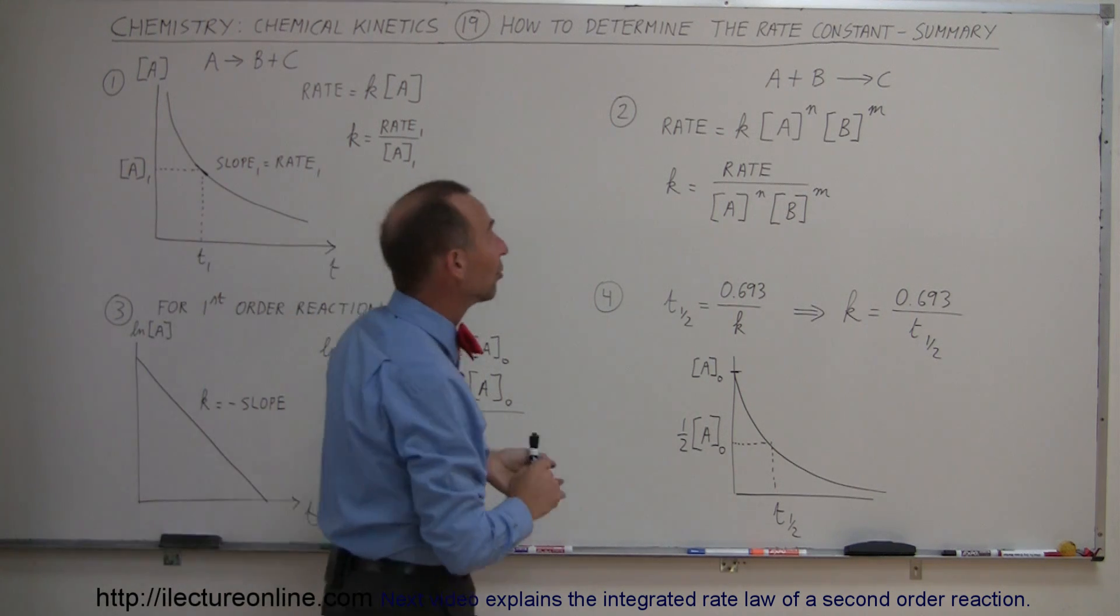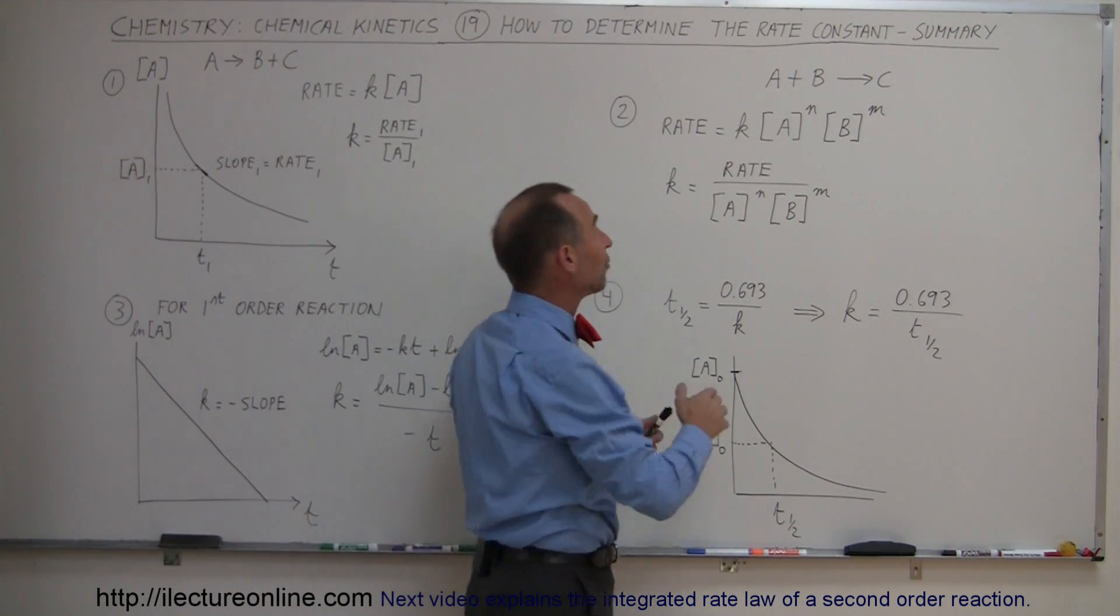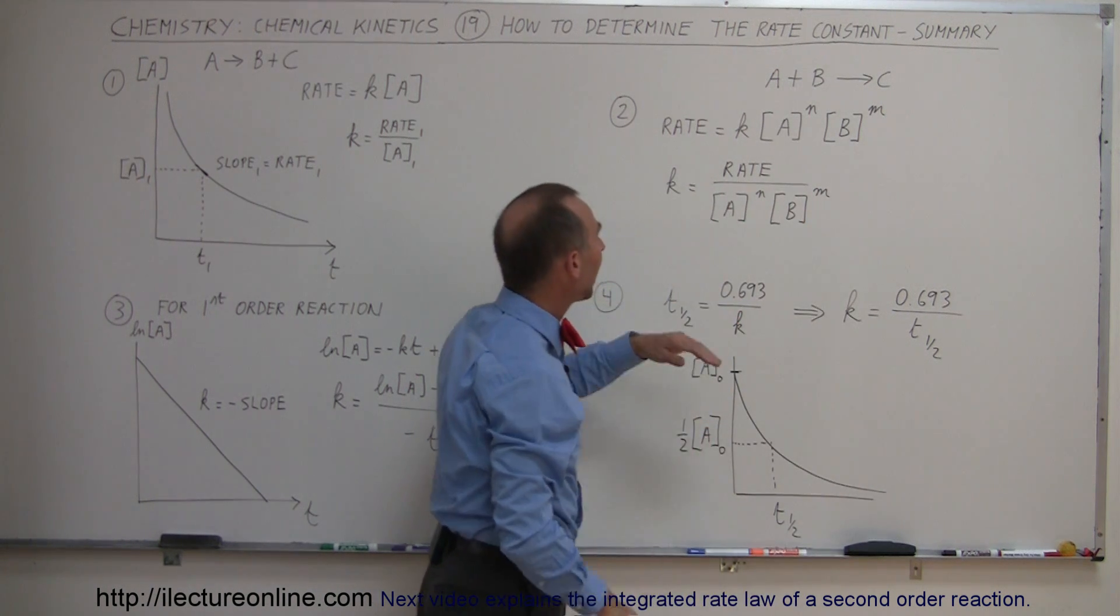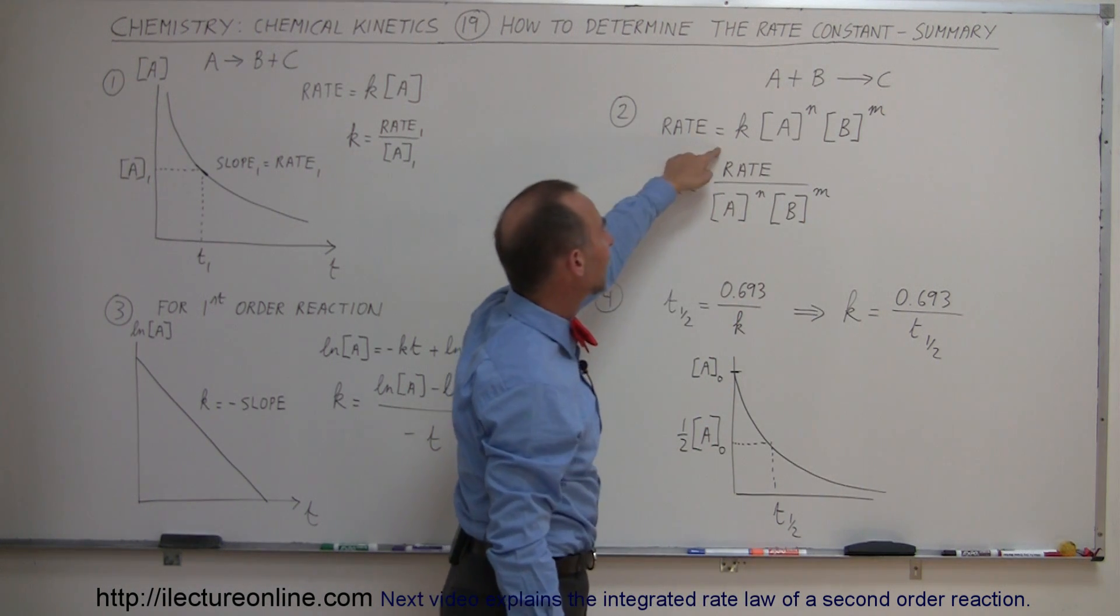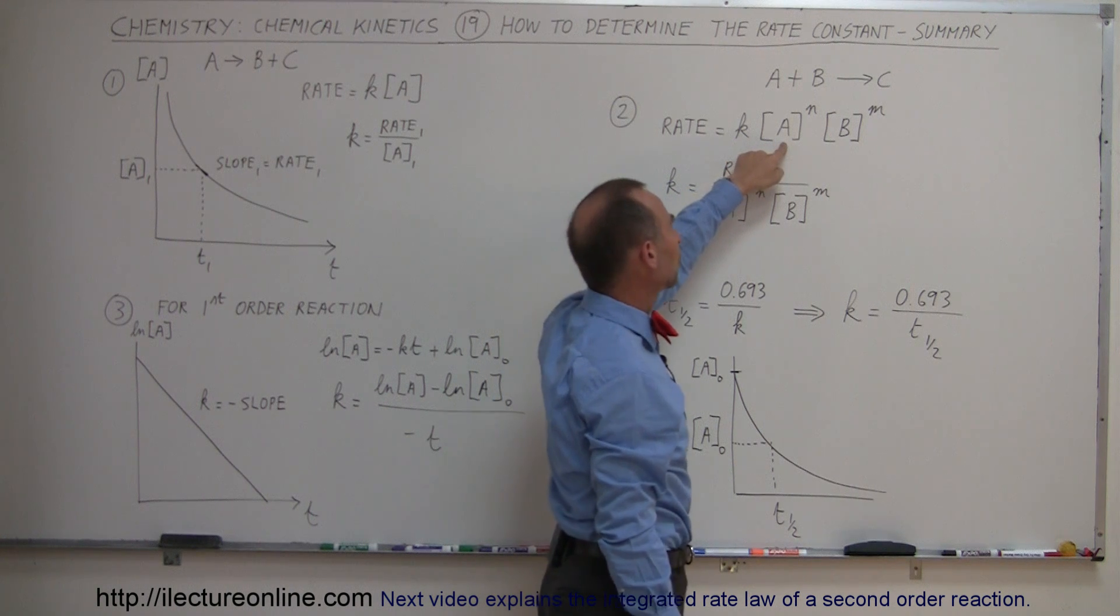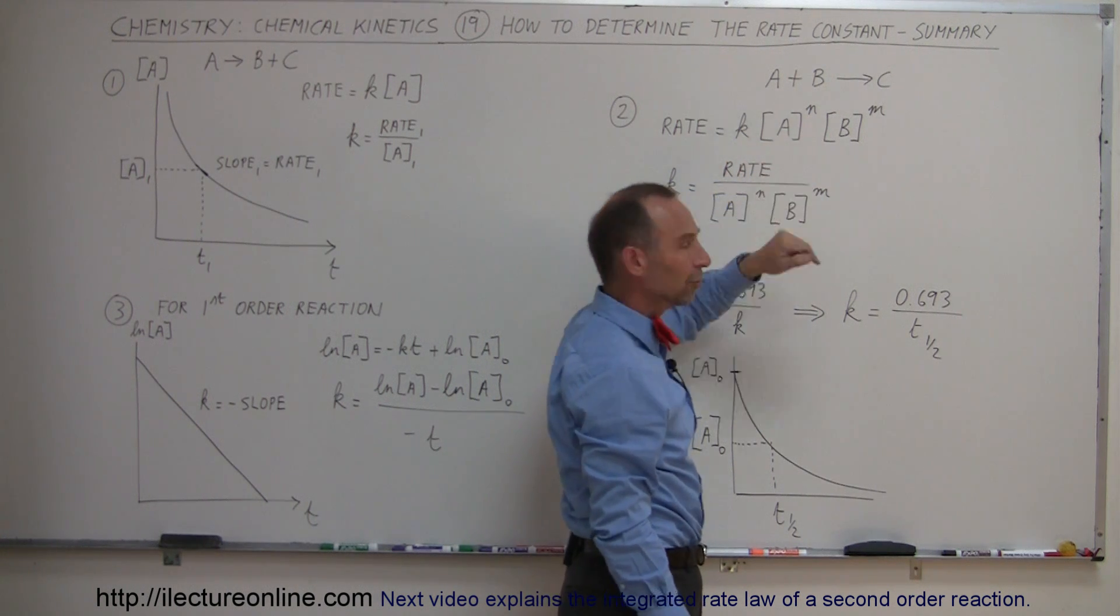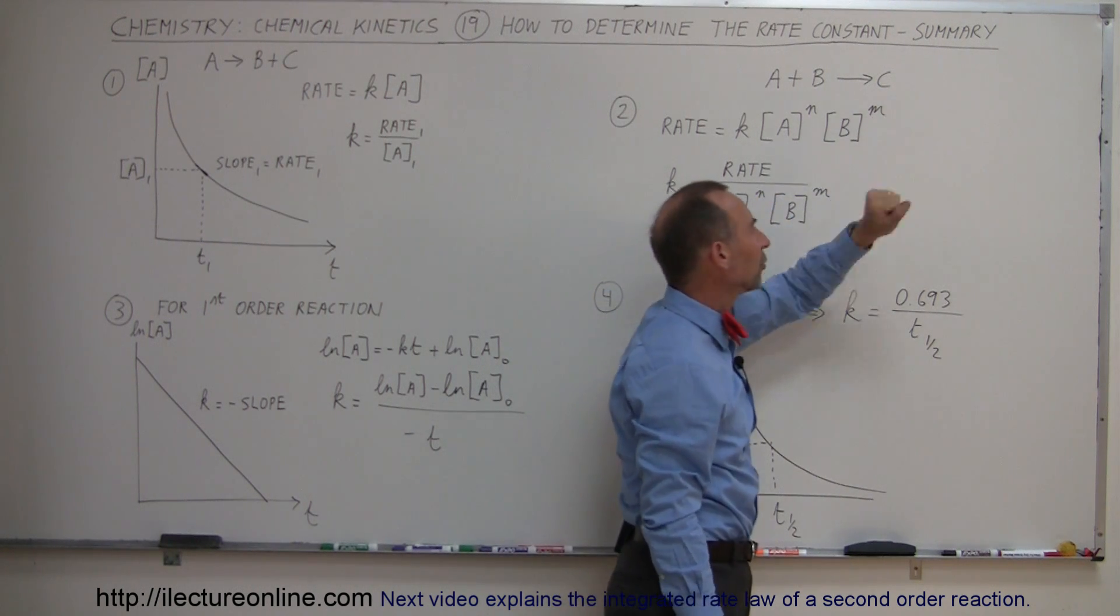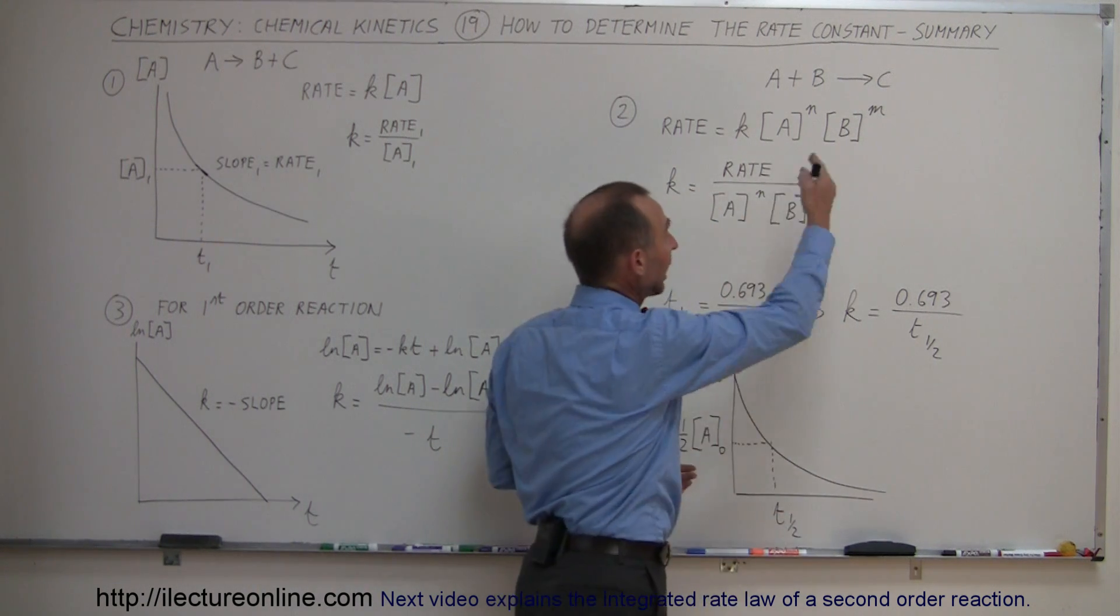Another way in which we can do it, if this is for example the type of reaction where we have multiple reactants turning into something else, and then we have the rate law which is equal to K times the concentration of the first reactant to the order N, so N and M here represent the orders, and times the concentration of B to the M order and so forth, if there's more of course you keep on adding.